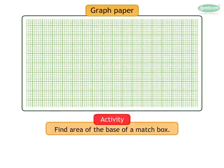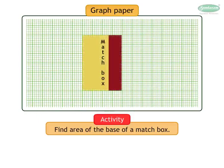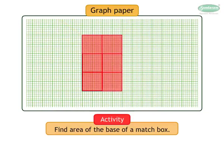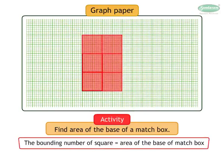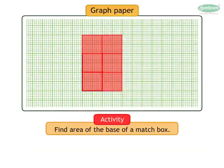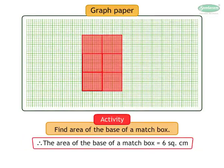Activity: Find the area of the base of a matchbox. Place the matchbox on graph paper. Trace its outline and count the number of squares inside. The number of squares is equal to the area of the base of the matchbox. Six squares are found. Therefore, the area of the base of a matchbox is equal to 6 cm².